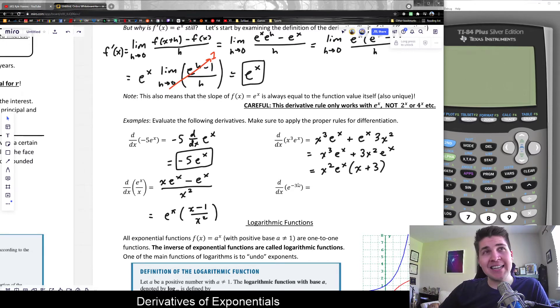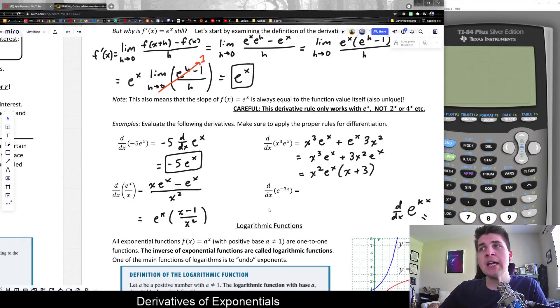And say I had the derivative of e to the negative 3x. Or more generally, let's also look at what's the derivative of e to the kx, where k is a constant. Because this is another helpful one to remember. And we'll do that in just a second.